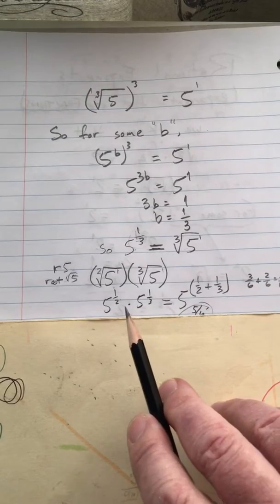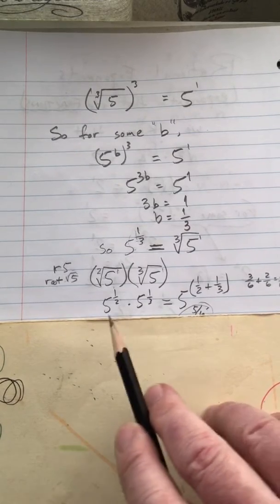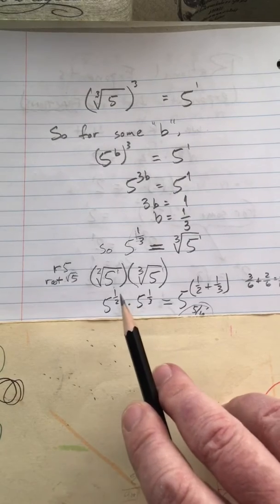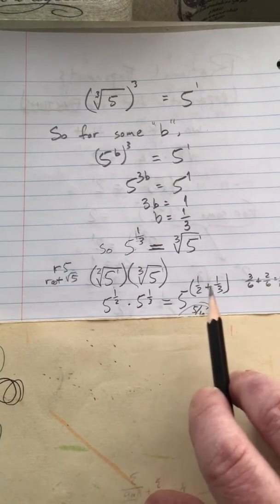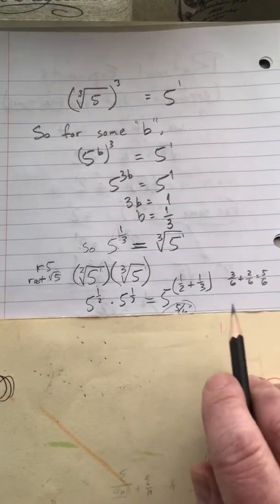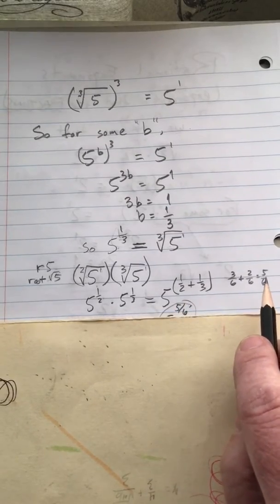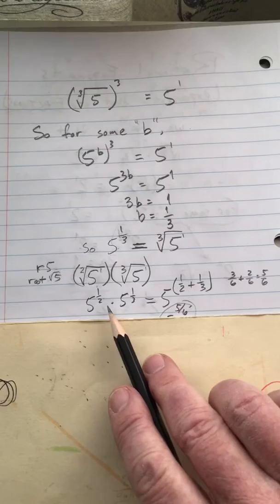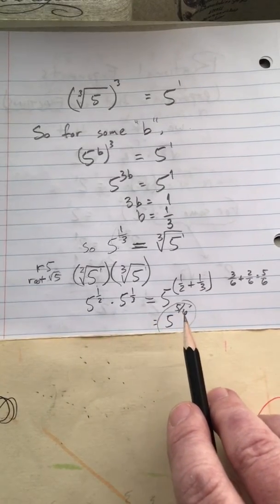But, if I can write them in their other form, then it becomes very easy to write the product in a simple way. So, in other words, I'm going to take the square root of 5 and write it as 5 to the one-half, and the cube root of 5 and write it as 5 to the one-third. And if you remember your rules of exponents, when you're multiplying two numbers of the same base raised to powers, all you have to do is write the base and then figure out what the sum of those two exponents is. So, one-half plus one-third equals five-sixths. So, five to the one-half times five to the one-third equals five to the five-sixths power.